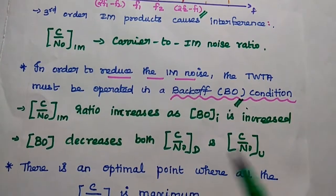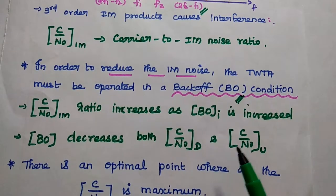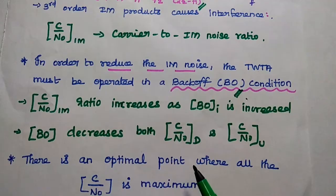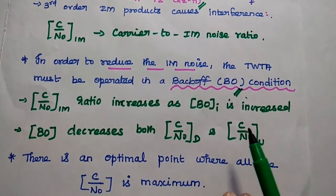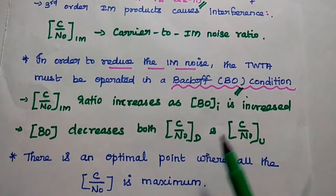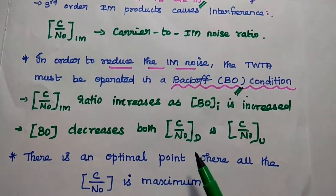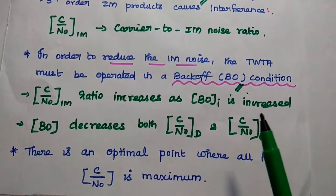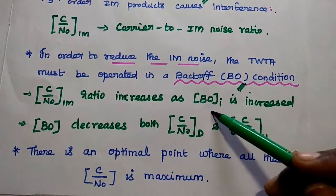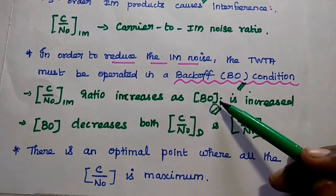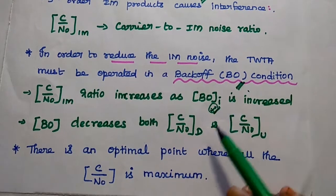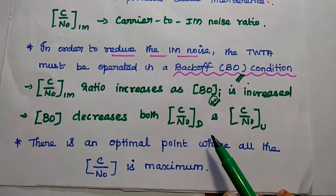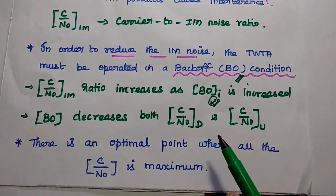Here, this input back-off value is increased means it will increase the carrier to noise ratio as well. But at the same time, this back-off condition decreases both downlink and uplink ratio. This back-off concept is very important in satellite communication to maintain the proper intermodulation noise as well as to keep the proper range of downlink and uplink ratios.